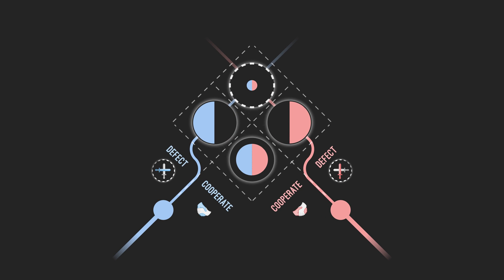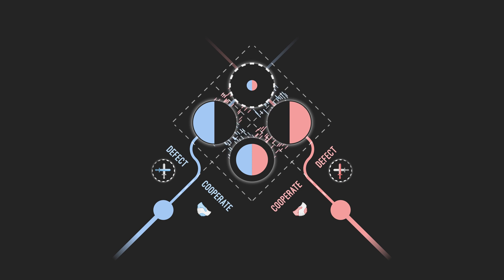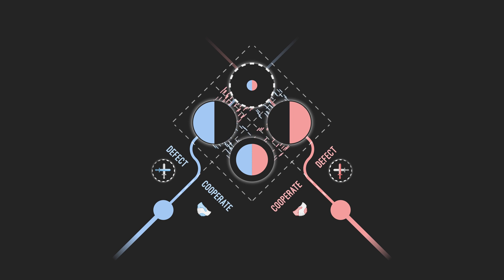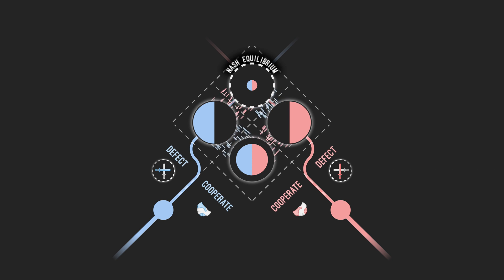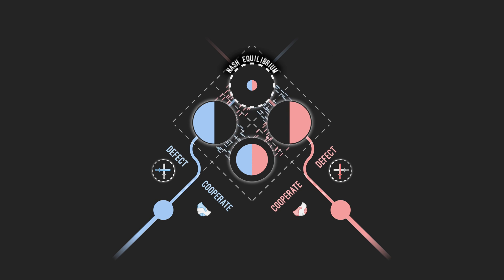Here we can see the flow of incentives, and unfortunately we always end up with mutual defection. This is the only scenario in which none of the players have an incentive to deviate their strategy. We call this the Nash Equilibrium. This is very unfortunate, because both players could be cooperating and helping each other out, but they end up being defective just because the incentives are not aligned.